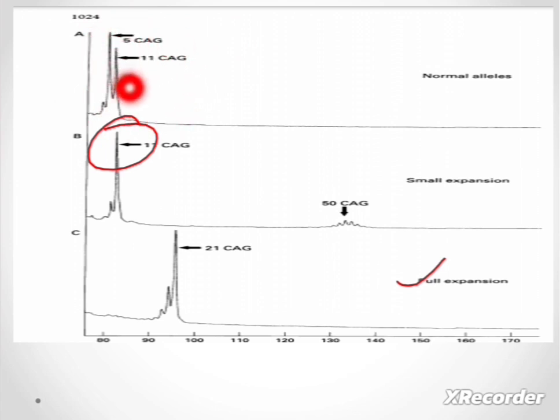In the second case, two peaks were observed: one of eleven and a second of fifty CAG expansions. There was only a small expansion with two peaks observed. As compared to the full expansion, where only one peak was observed at twenty-one CAG and no other peak was observed.